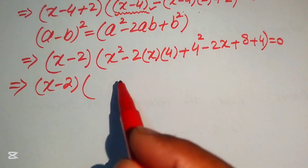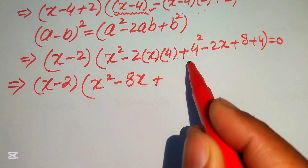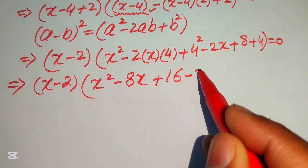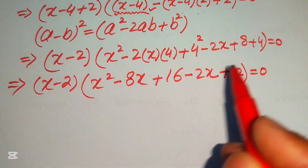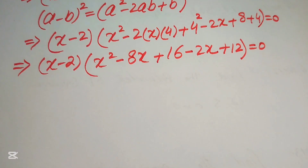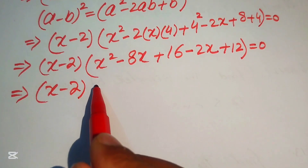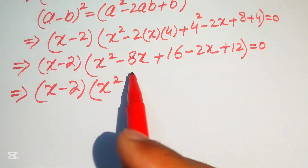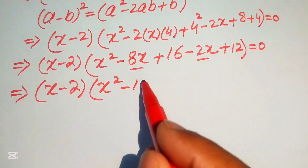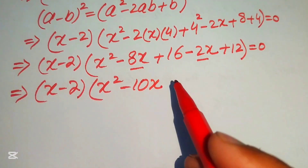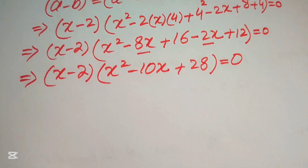Continuing simplification: 2 times 4 gives 8x, and 4² = 16. Collecting like terms: -8x - 2x = -10x, and 16 + 12 = 28. So the equation becomes (x - 2)(x² - 10x + 28) = 0.